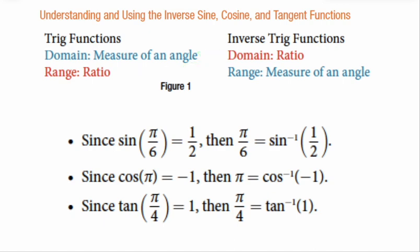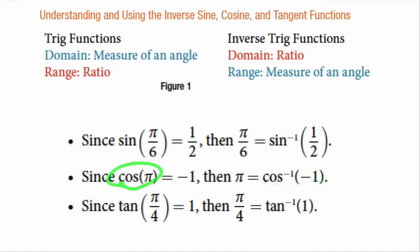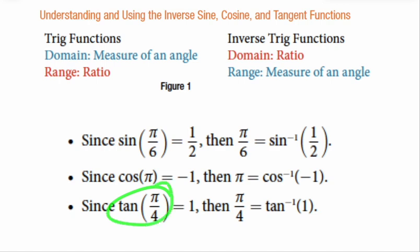So normally we say the sine of π/6 is 1/2, and here we're saying the angle measure π/6 is the inverse sine of 1/2. The inverse cosine of negative 1 leads us back to π, because the cosine of π was negative 1. The inverse tangent of 1 is π/4, because the tangent of π/4 is 1. We are going backwards on the unit circle — you have to think about what quadrant you're in.